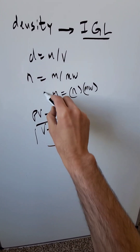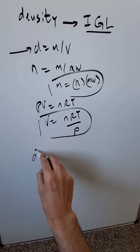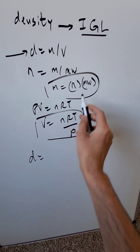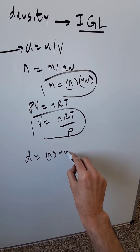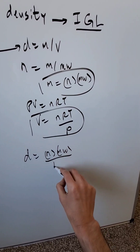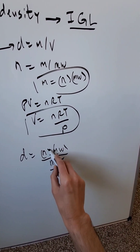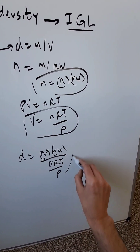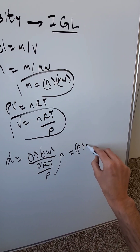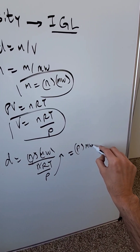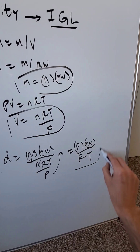There are a bunch of substitutions which will come into play in the density equation. Density is equal to mass over volume, but mass is equal to moles times molecular weight, divided by volume, which is equal to nRT over P. The moles cancel out and the pressure comes up. Density is equal to pressure times the molar mass divided by RT.